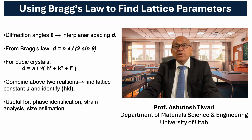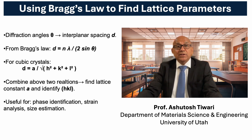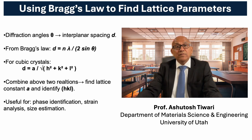Once the d-values are known, they can be related to the lattice parameters and the Miller indices of the diffracting planes through simple geometric relations. For example, in cubic crystals the inverse of d squared is proportional to the sum of h squared plus k squared plus l squared, divided by a squared. By combining the experimentally measured d-spacings with this relation, we can determine both the lattice constant of the crystal and identify which planes produce each diffraction line.